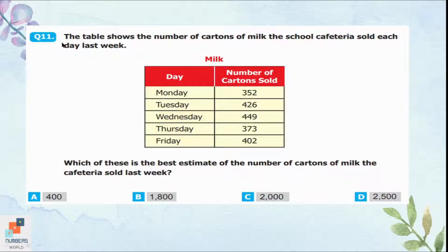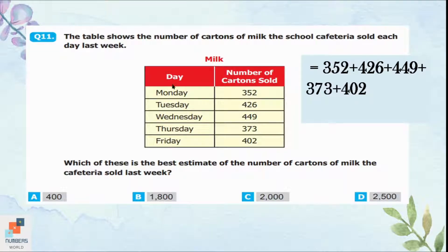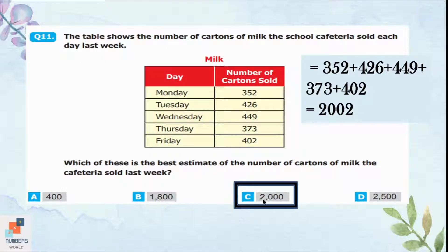Question 11: The table shows the number of cartons of milk the school cafeteria sold each day last week. Which is the best estimate of the total cartons sold? Adding all cartons from Monday to Friday gives 2002. Looking at the options, option C — 2000 — is the best estimate, as it is closest to 2002. Option C is correct.